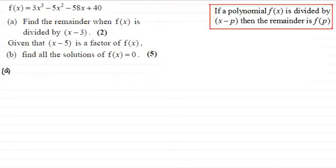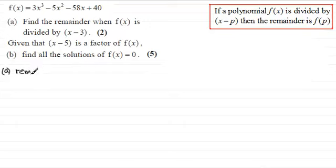As a brief reminder — I've got tutorials on this on my website — if a polynomial f of x is divided by x minus p, then the remainder is f of p. For this question we can see that p would be 3, so the remainder is equal to f of 3.